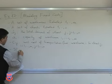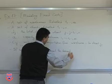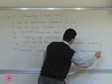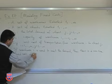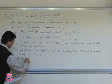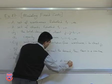There is an additional constraint: if warehouse i is used to meet the demand, then there's a one-time fixed cost fi, where i goes from 1 to m. What we want to do is meet the total demand of each client at minimum total cost.